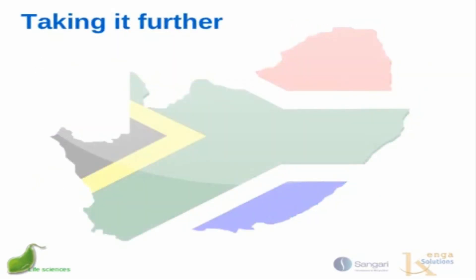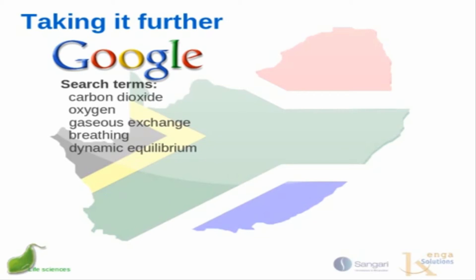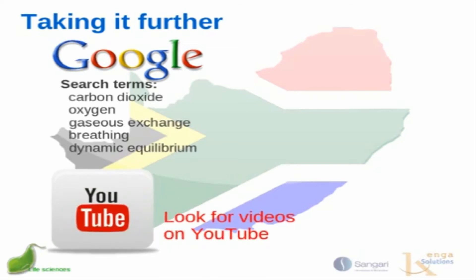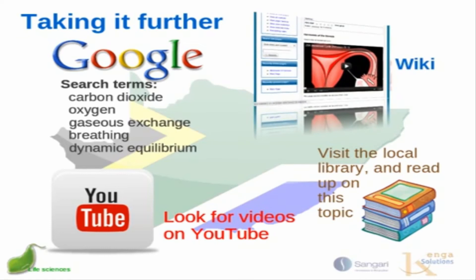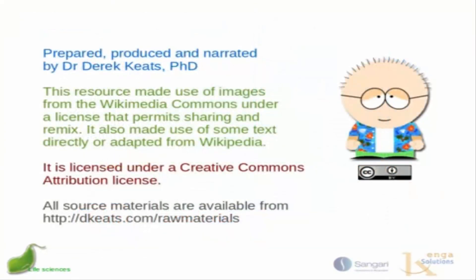We've now covered what's needed for the grade 12 syllabus. To explore further, you can search for terms like carbon dioxide, oxygen, gaseous exchange, breathing, or dynamic equilibrium. Look for videos on YouTube, visit the library, and if you find good resources, share them on the wiki — you can embed videos or link to them with a brief description. Helping each other will benefit everyone in the matric exam. I'm Derrick Keats, and this resource is licensed under a Creative Commons Attribution License.